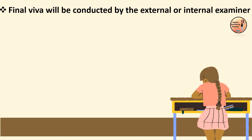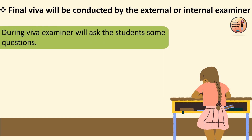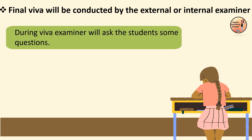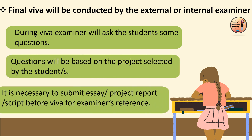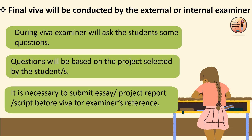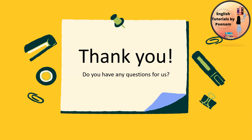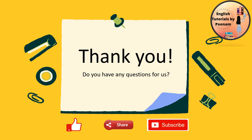The final viva will be conducted by the external or internal examiner. During the viva, the examiner will ask the student some questions based on the project selected by the student. It is necessary to submit your essay, project report or script before the viva for the examiner's reference. With this, we come to the end of this lecture on ASL for Term 2. I hope your doubts regarding ASL are cleared now. If you still have any queries, feel free to drop a comment and I will get back to you. Like, share and subscribe to English Tutorials by Poonam Thakur.